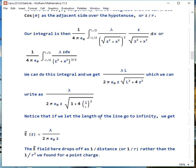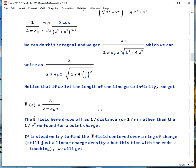Now, if we let the length of the line go to infinity, we get this, because this part will cancel out, lambda over 2π epsilon naught z. Here, the e field is dropping off as 1 over the distance, we would say 1 over r, rather than 1 over r squared for a point charge. This is a fundamentally different system than a point charge.